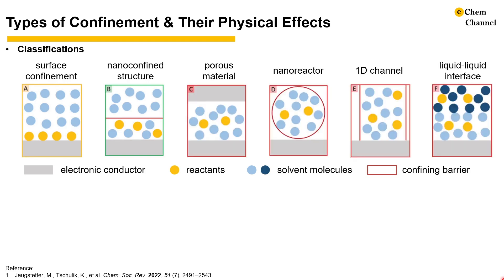Numbers C through F are a porous material, a nanoreactor, a 1D channel, and a liquid-liquid interface. The solvated species can move in three dimensions in these systems but are limited to a nanometer range. Some non-classical effects include Knudsen diffusion, where the adsorption is no longer rate limiting due to the increased probability of collision within the confined space.